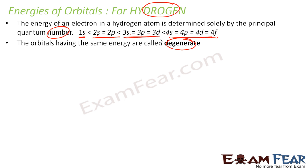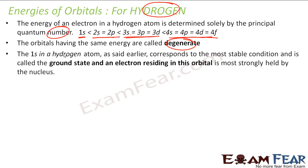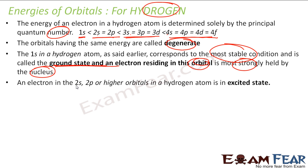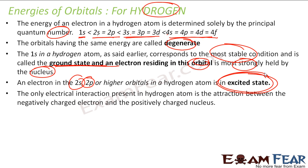Orbitals having the same energy are called degenerate orbitals. The 1s in the hydrogen atom is the most stable condition and it is called the ground state. The electrons in this orbital are strongly held by the nucleus and have minimum energy. Electrons in 2s, 2p, and higher orbitals are called excited state, because they are not in the ground state — they have less energy and it is easy to remove electrons out of excited state orbitals.